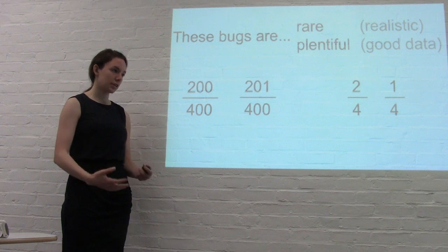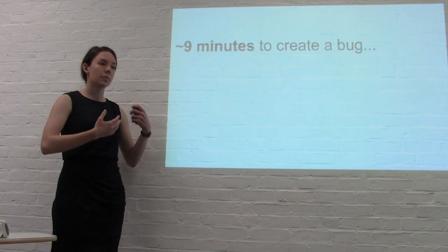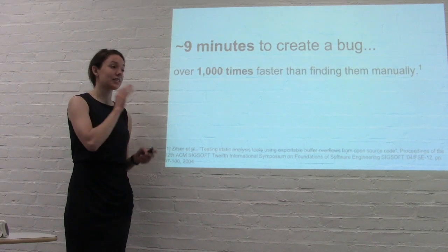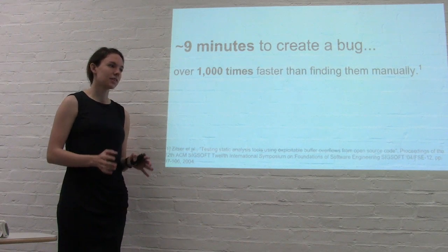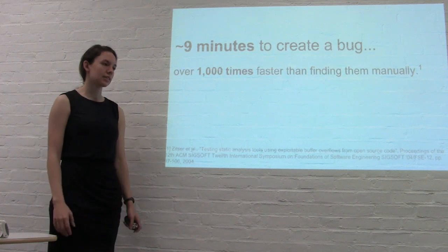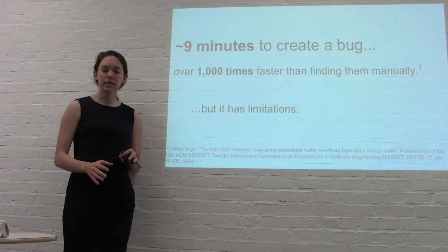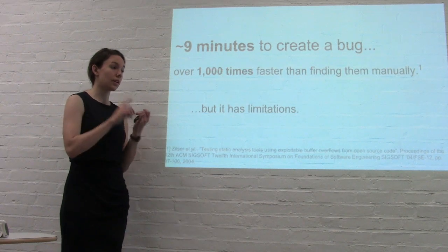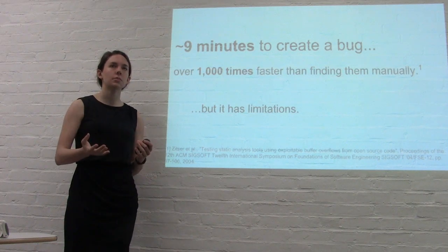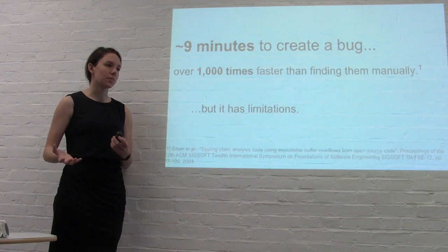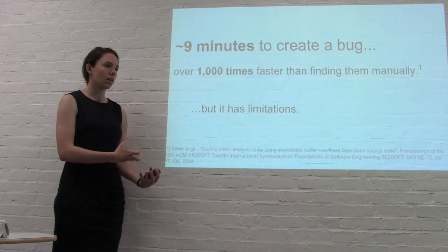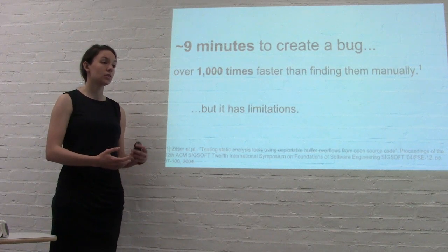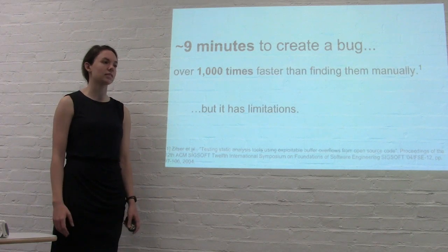Researchers have created an automatic system like this to put bugs into programs, and they found it took about nine minutes to create a bug. Doing it automatically is a thousand times faster than finding bugs manually — way more effective than looking through programs and finding what bugs already exist in them. But there are some limitations: you can really only check certain types of bugs, like dividing by zero or reading a file. These are the kind of bugs that caused the Ariane 5 rocket explosion or the very first computer virus, but there are other types that are more subtle or abstract, like understanding the logic of something or a protocol. I hope you can see that by using a system like this, you can have more confidence in the computer programs that you trust every day. Thank you.